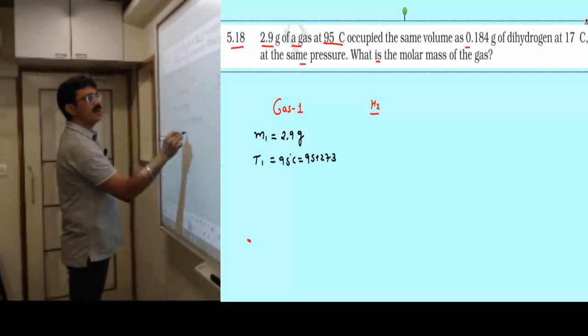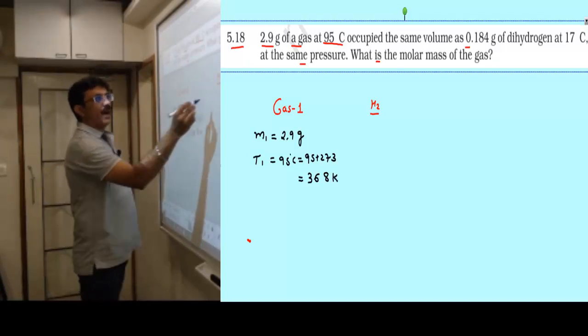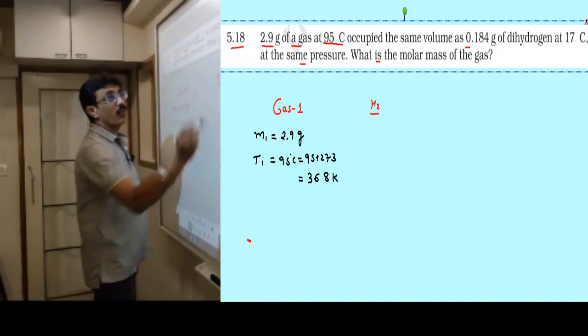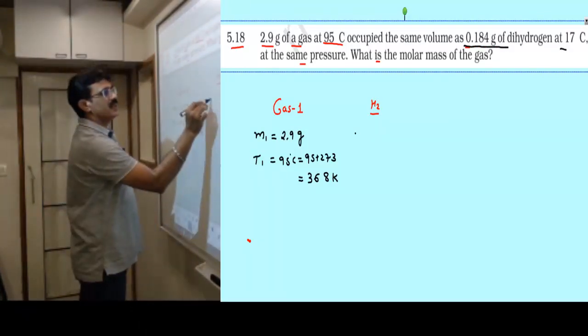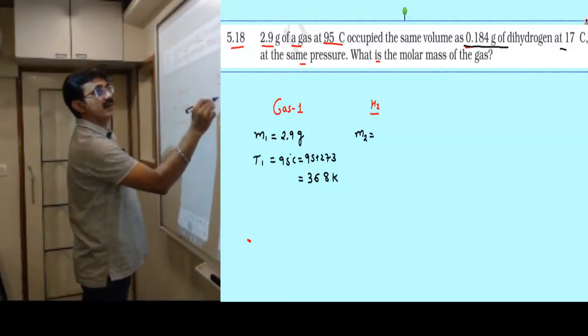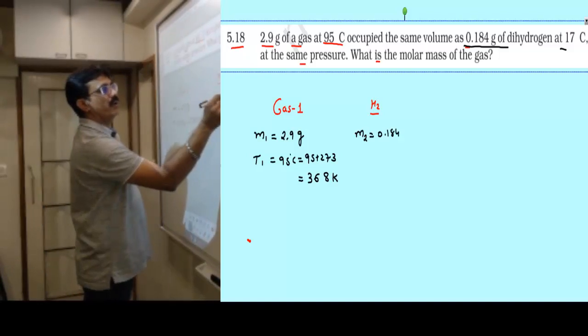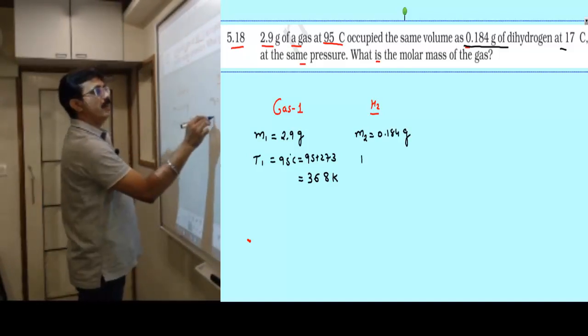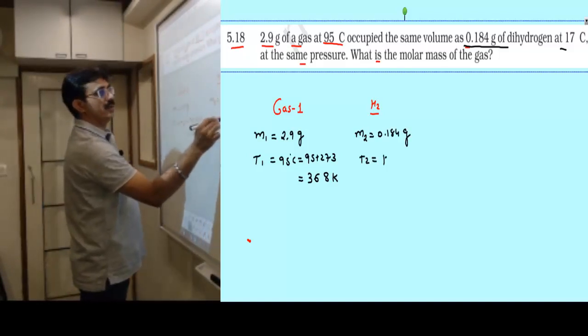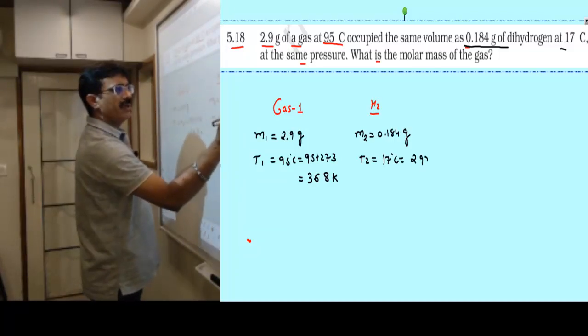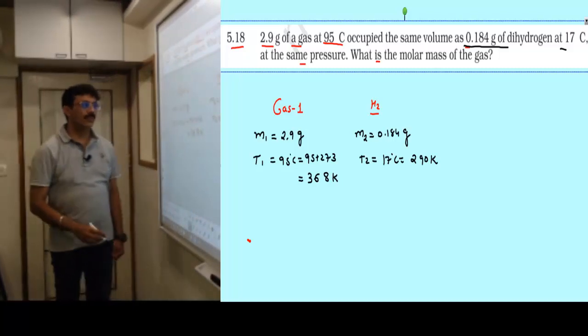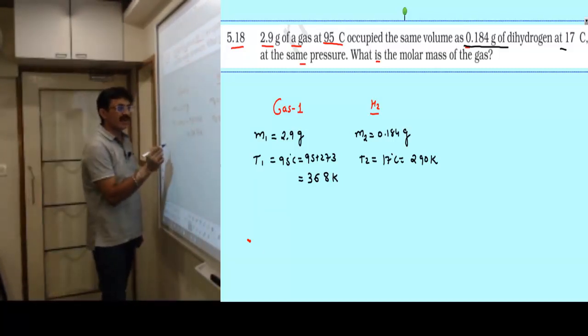For hydrogen, mass is 0.184 gram and temperature is 17 degree Celsius, equals 290 Kelvin.